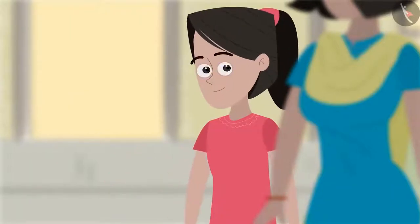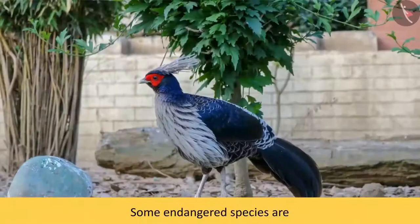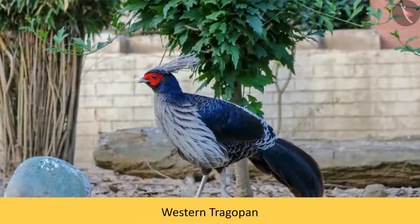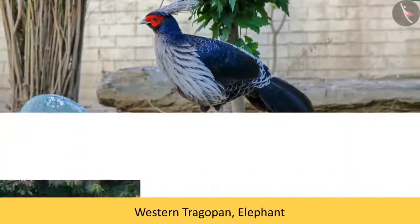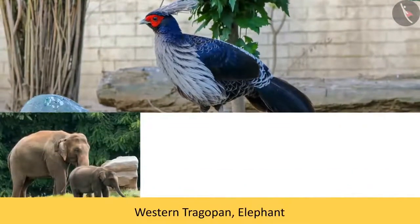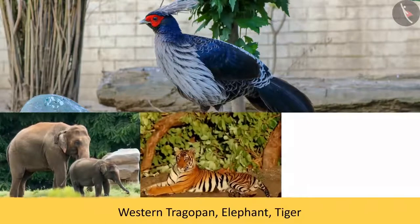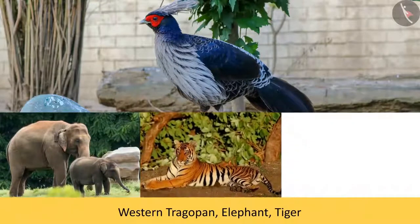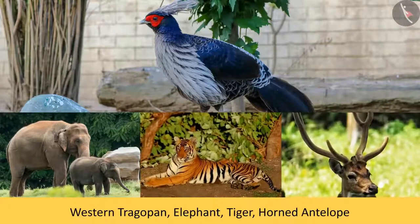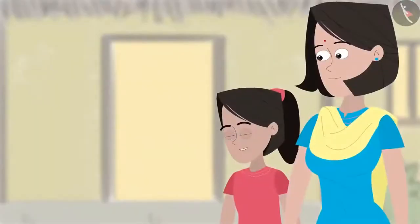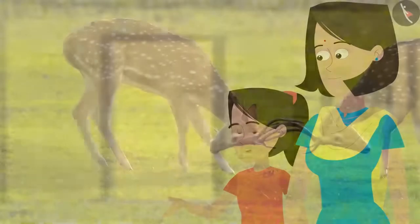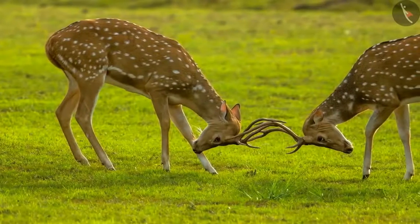Some endangered species are western tragopan, elephant, tiger, horned antelope, etc. It's good to know that the government is also doing so much to protect these animals. Why do you think it is important to conserve these animals? I think plants, trees and animals are all important for the environment, as we are all dependent on each other in some way.